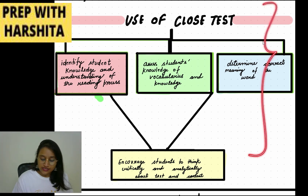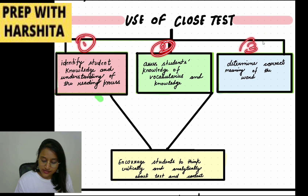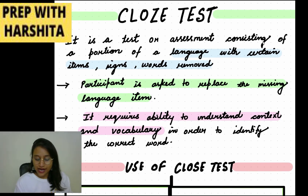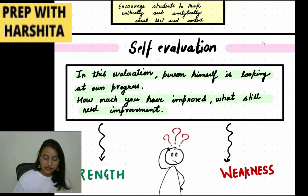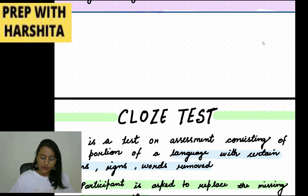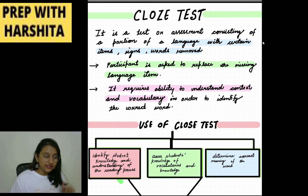So these are the uses of the cloze test. There are basically four uses: identifying student knowledge, vocabulary testing, determining correct word meaning, and encouraging critical thinking. A cloze test is an assessment in which you are given a portion of language and the student fills in the missing parts. Next, we will cover the next video which is about self-evaluation.